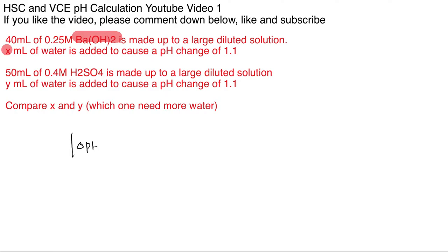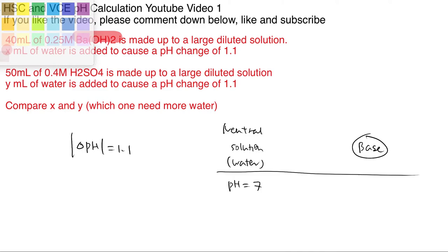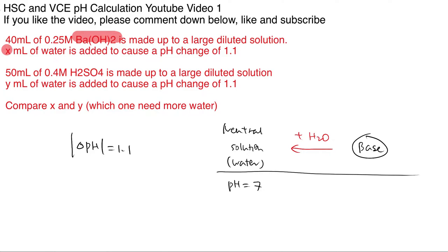We first need to work out whether the pH is increasing or decreasing when we add water. Pure water is neutral with pH 7, and a base has a very high pH. When you add water to a base, you dilute the solution, and the pH is actually going to decrease towards 7. That's the first thing we need to know.